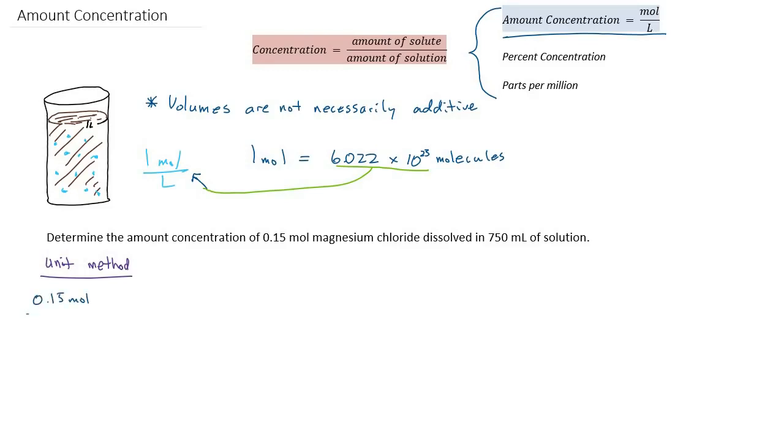And so if you do that math, you will get 0.20, and I'll add another zero for significant digits, moles per liter of magnesium chloride. So we just strictly made our units turn into moles per liter.